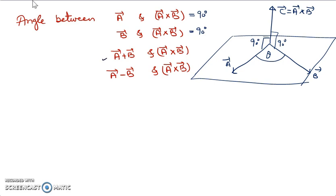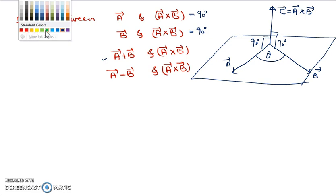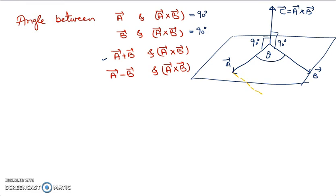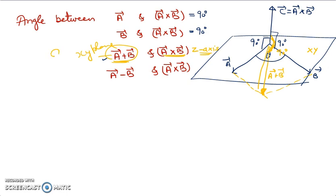But what about the angle between (a + b) and (a cross b)? To find a + b, we apply the parallelogram law of vector addition — the resultant a + b lies in the same plane as a and b. Since a + b lies in the plane of a and b, and a cross b is perpendicular to that plane (along the z-axis if a and b are in the x-y plane), the angle between (a + b) and (a cross b) is 90°. Similarly, (a − b) also lies in the x-y plane, so the angle between (a − b) and (a cross b) is also 90°.